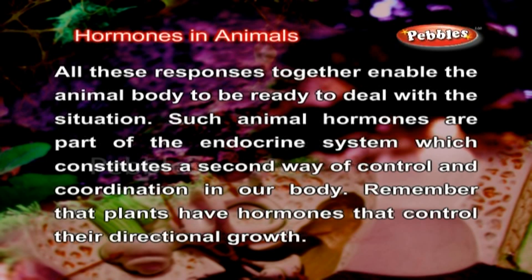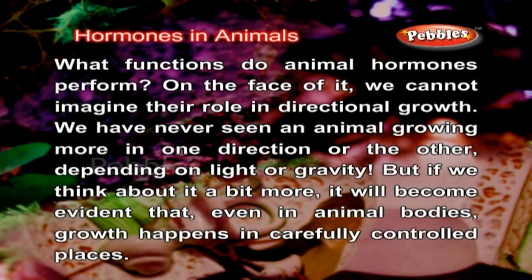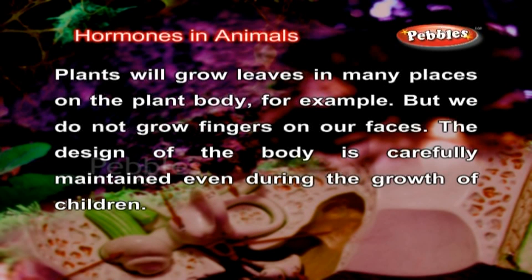Such animal hormones are part of the endocrine system, which constitutes a second way of control and coordination in our body. Plants also have hormones that control their directional growth. We cannot imagine such a role in directional growth in animals — we have never seen an animal growing more in one direction depending on light or gravity. But even in animal bodies, growth happens in carefully controlled places. Plants will grow leaves in many places on the plant body, but we do not grow fingers on our faces. The design of the body is carefully maintained even during the growth of children.